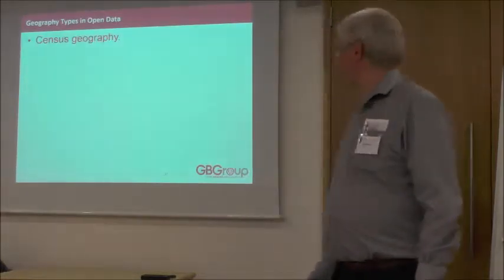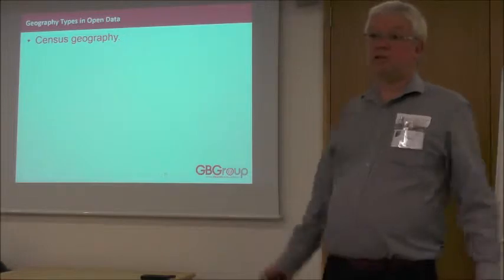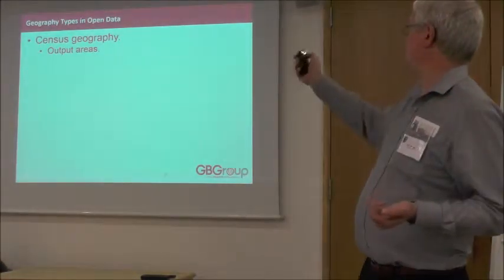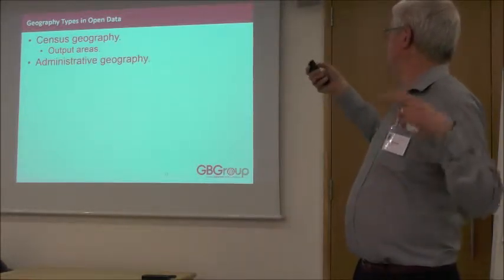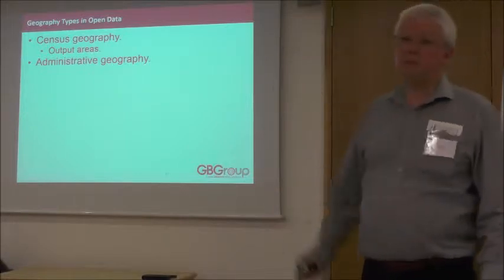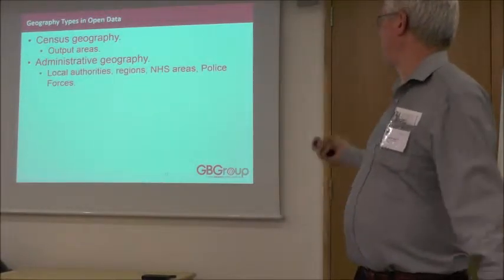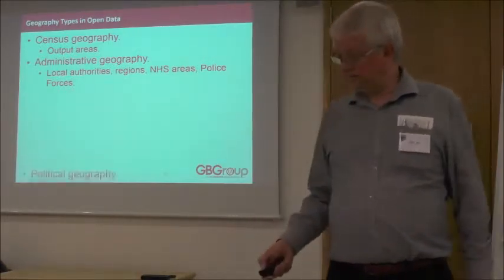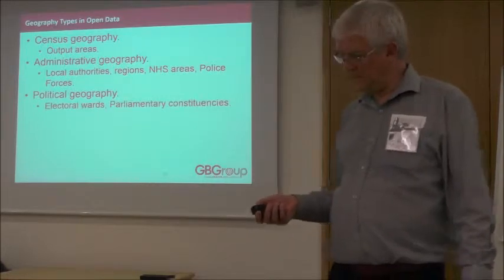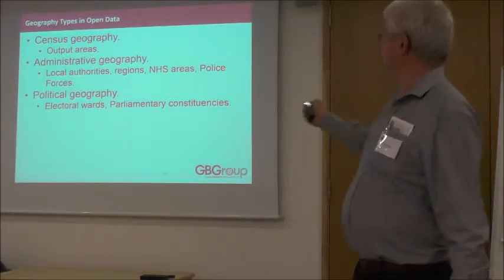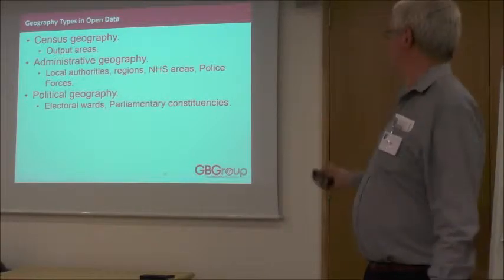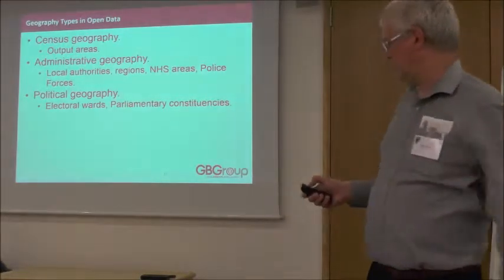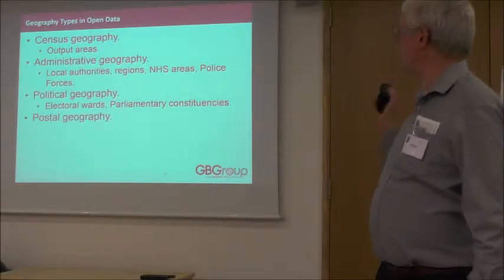What geography types do you get? Census data has a hierarchy — it has output areas. You've got administrative geographies: local authorities, regions, police, NHS, etc. Political geography: electoral wards, parliamentary constituencies. They don't all quite align, so you need to understand how that works.